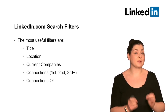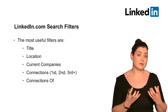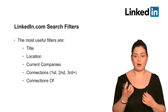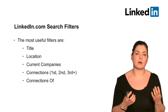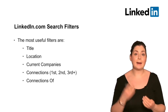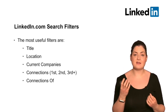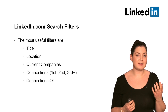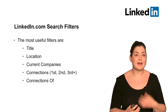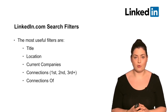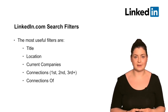Job title can also trip us up sometimes because job titles are made up of two different parts — some form of functional element and some form of seniority or hierarchical element. For example, a project manager: 'project' is the function and 'manager' is the seniority. Making sure that we write a boolean string that accounts for the function as well as the seniority level, or one or either of those, will really help us expand our search to find exactly the right people based on their job title.